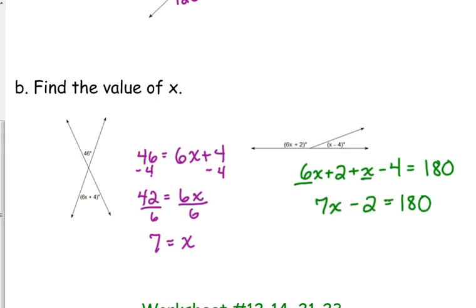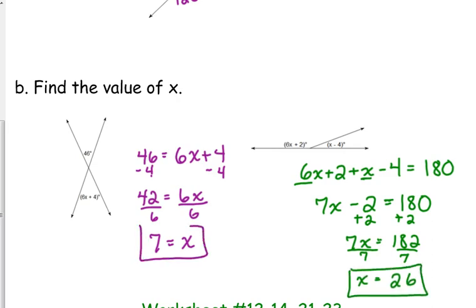And then we have an equation just like we just solved. Add 2 to both sides. 7X is equal to 182. Divide by 7, so X is equal to 26.